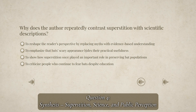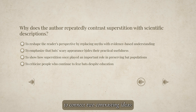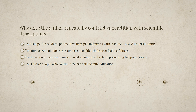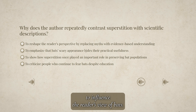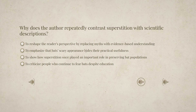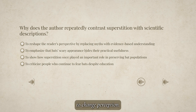Question four: Synthesis — Superstition, Science, and Public Perception. This question asks you to connect two contrasting ideas: fear and understanding. You'll need to think about how the author uses both to influence the reader's view of bats, and consider how contrasting emotions and technologies work together to change perception.